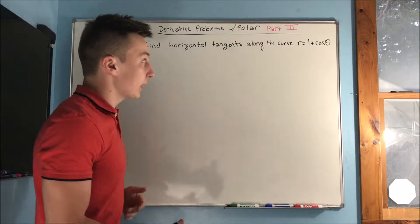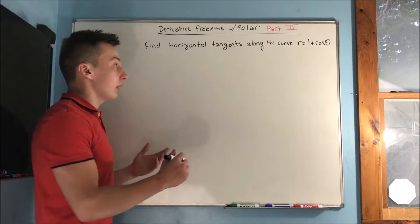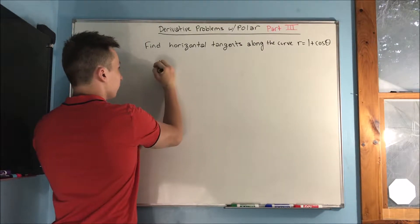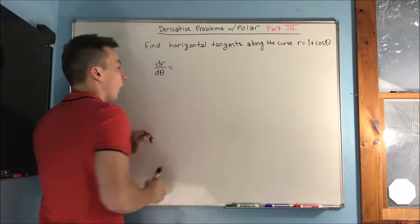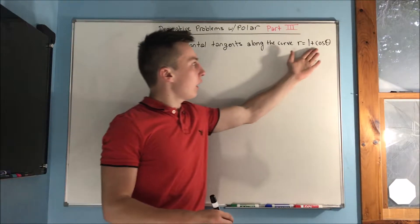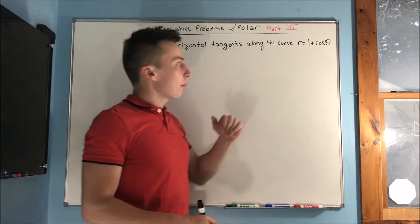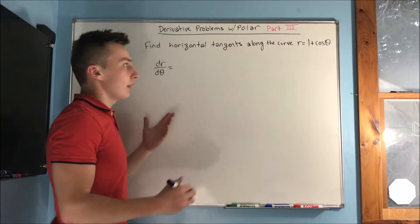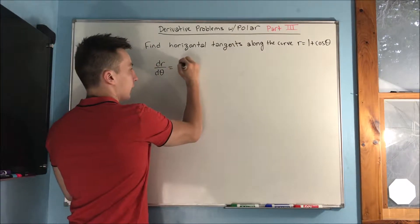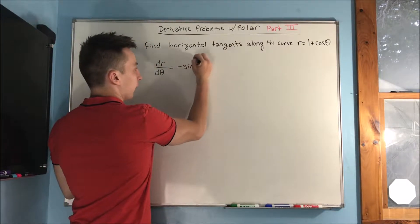The first thing we need to do is find dr/dθ. The derivative of 1 plus cosine theta is just going to be negative sine theta.